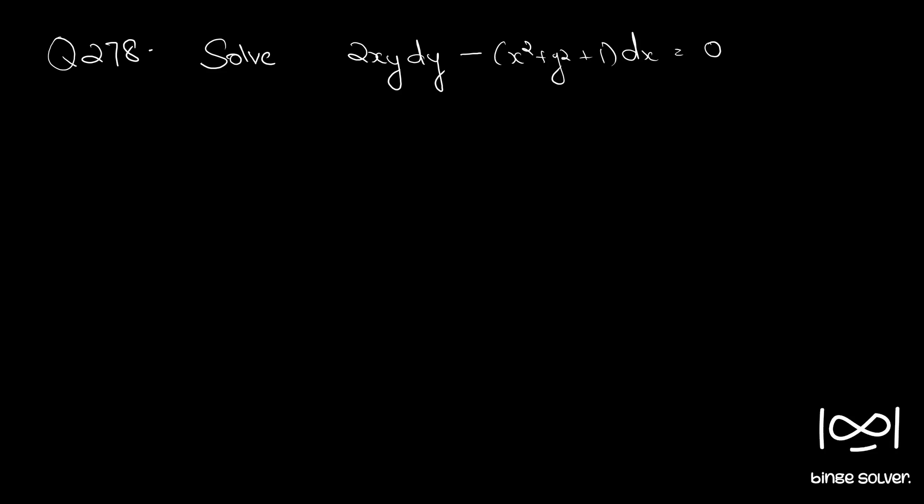Question number 278. Solve 2xy dy minus (x squared plus y squared plus 1) dx equals zero.